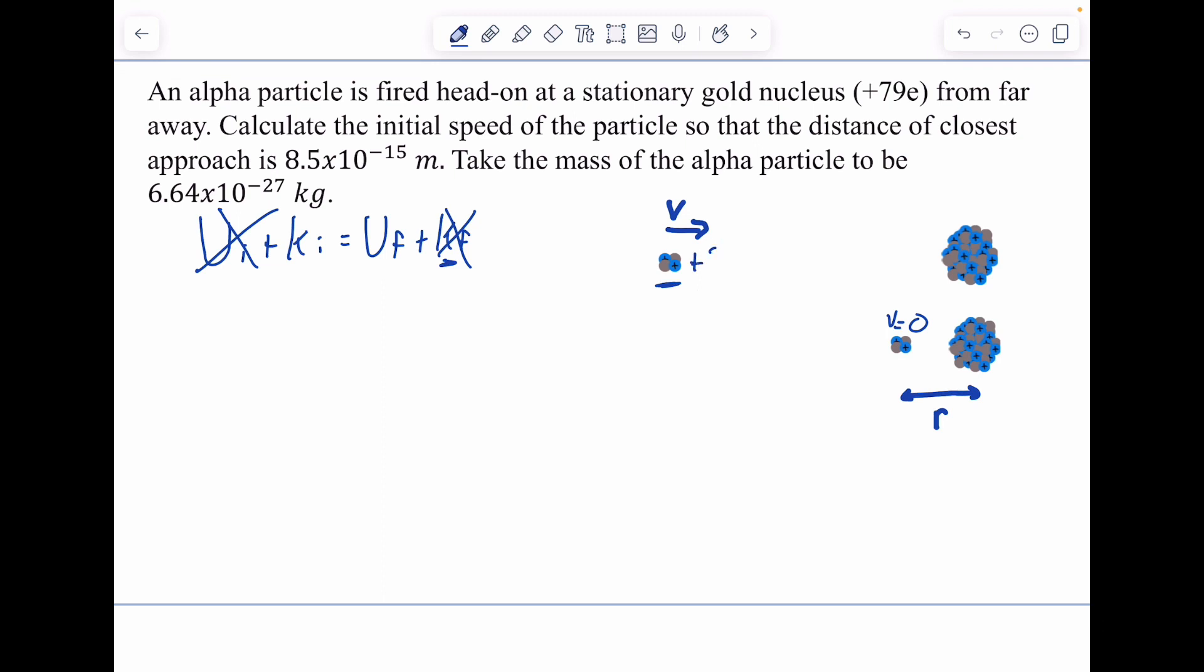The alpha particle has a charge of plus 2e, which is the elementary charge. And the gold nucleus has 79 protons, so it has a charge of 79e.